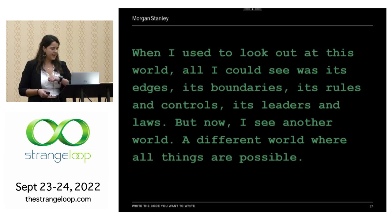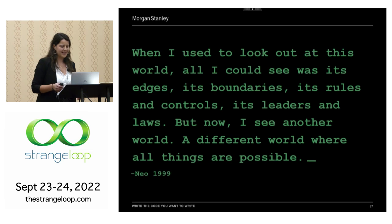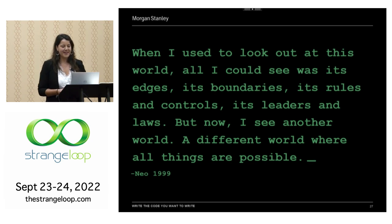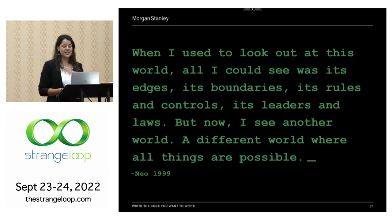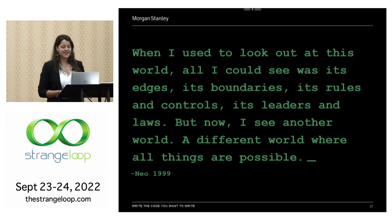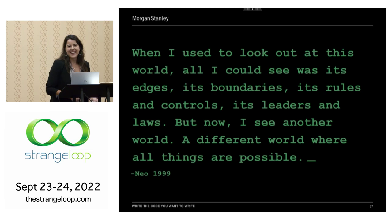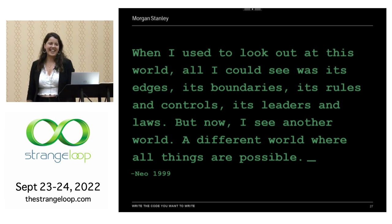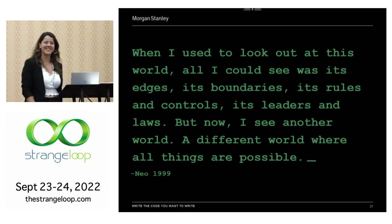Going to end on a quote: 'When I used to look out at this world, all I could see was its edges, its boundaries, its rules and controls, its leaders and laws. But now I see another world, a different world where all things are possible.' I hope everyone got the Matrix references — otherwise this is just silly. Thank you.